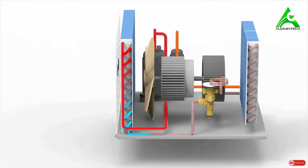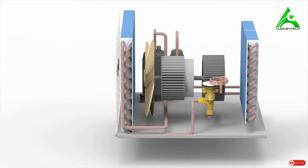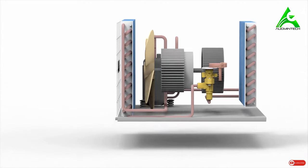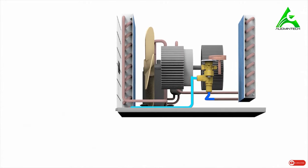The refrigerant leaving the condenser is low temperature liquid refrigerant, which then enters the expansion valve. The expansion valve decreases the pressure of the refrigerant, and the refrigerant leaves as low temperature, low pressure liquid refrigerant.